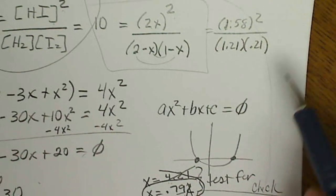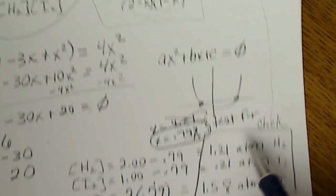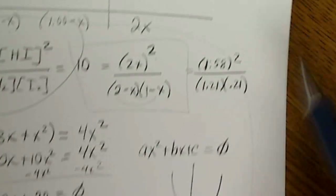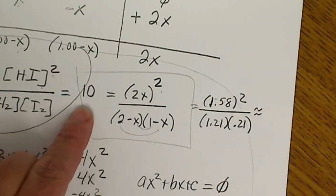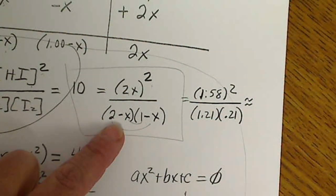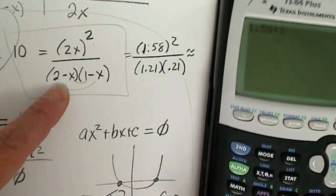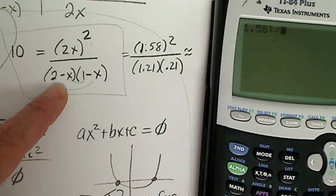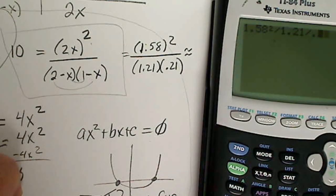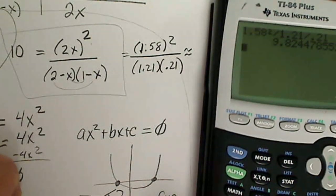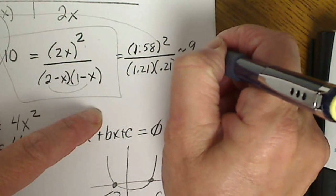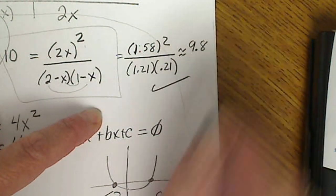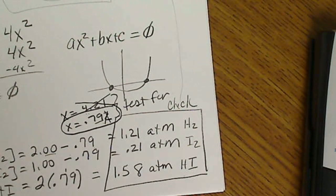And divide that by 1.21 and 0.21. And again, those are just the equilibrium values that we obtained. If we do the math here, we should get very close to 10, and that way we can make sure that we did the problem correctly. So if I take 1.58 and square it, then divide by 1.21 and divide by 0.21, we've got two denominators, I get 9.8, which is close enough. So we rounded these values, so that means that the answer checks out.